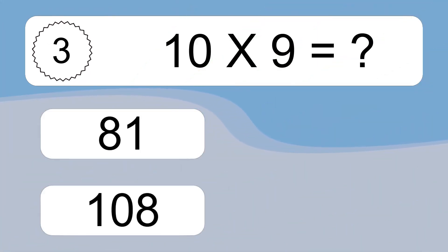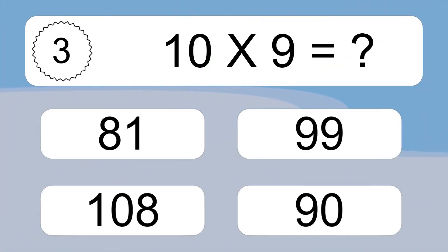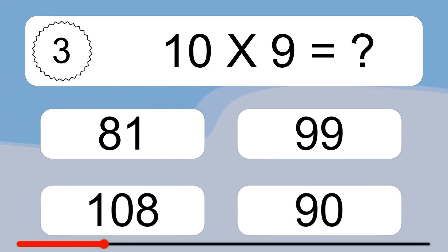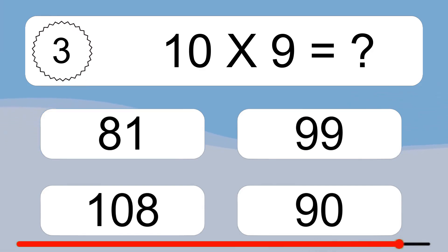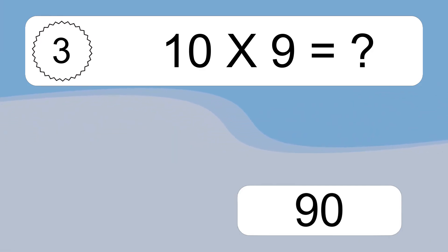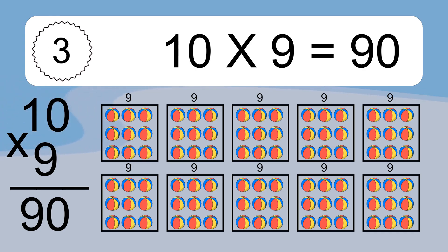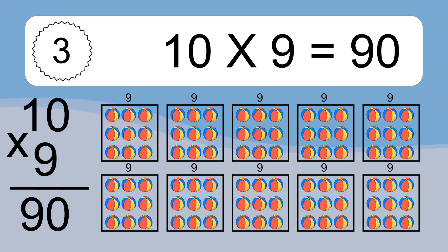10 times 9 equals what? We have 10 boxes, and each box has 9 colorful balls inside. If you count all the balls in all the boxes together, you will have 10 times 9 balls. This equals 90 balls.